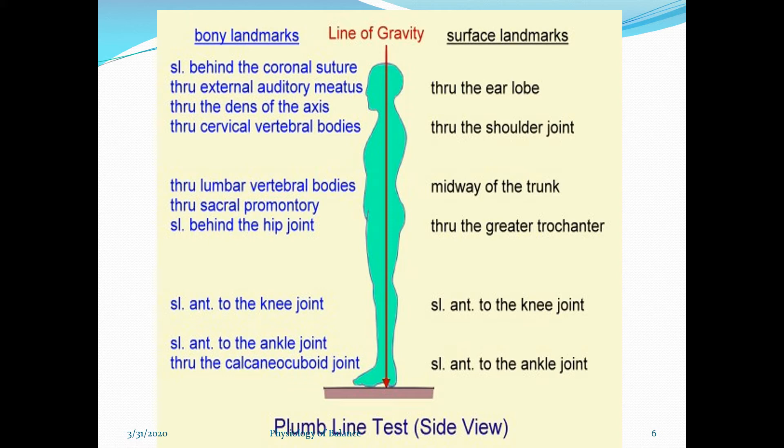Now the bony landmarks: the plumb line passes slightly behind the coronal suture, through the external auditory meatus, through cervical vertebral bodies, through lumbar vertebral bodies, through the sacral promontory, slightly behind the hip joint, slightly anterior to the knee joint, slightly anterior to the ankle joint, and through the calcaneo-cuboid joint.